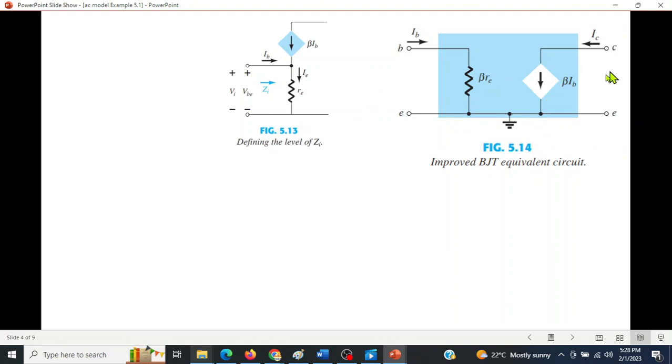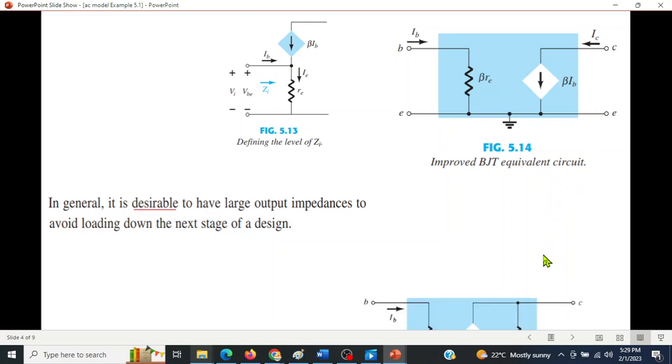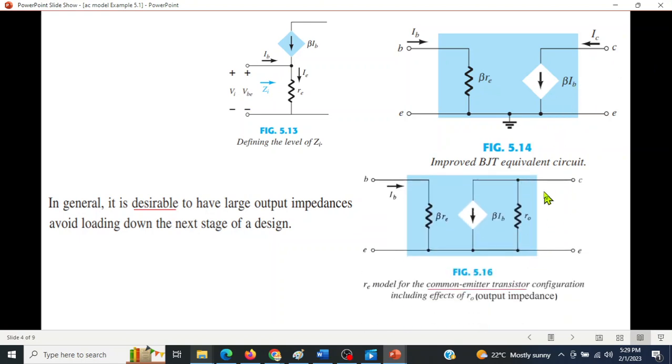In general it is desirable to have a large output impedance to avoid loading down the next stage. Here we have not shown any impedance but it is desirable to have a large impedance so the loading with the next stage does not take place. So we have connected a high value resistance here and this circuit is now the r_e model for common emitter transistor configuration.